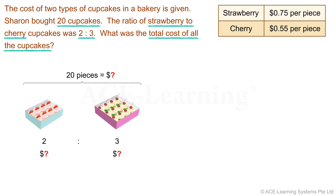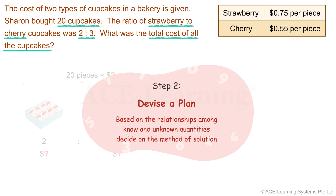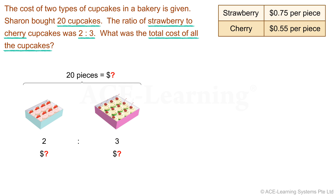Now that we have understood the problem, let's proceed to the next step. Step 2: Devise a plan. Based on the relationships among known and unknown quantities, decide on the method of solution. We can either use a comparison model or a part-whole model to represent the problem. In this lesson, we'll use the comparison model.